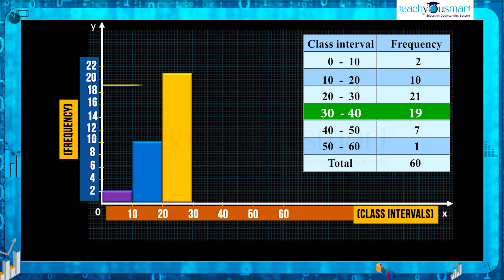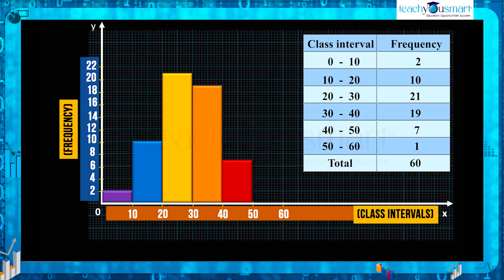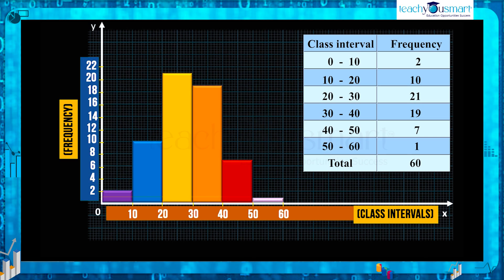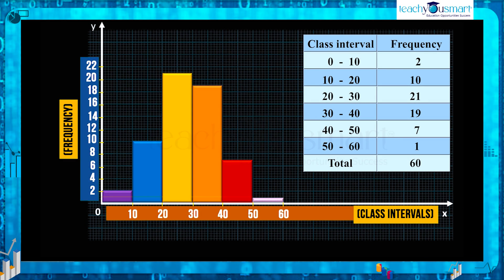Next, in 30 to 40 there are 19 students, so draw a bar of height 19. In 40 to 50 there are 7 students, so draw a bar of height 7. And in 50 to 60 there is only 1 student, so draw a bar of height 1. Now we get a histogram. The height of the bars shows the frequency of the class interval, and there is no gap between the bars as there is no gap between the class intervals. This type of graph is called a histogram.